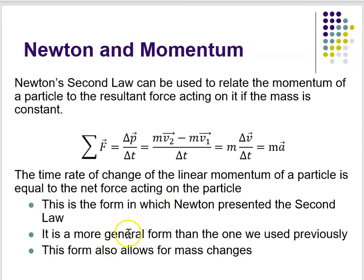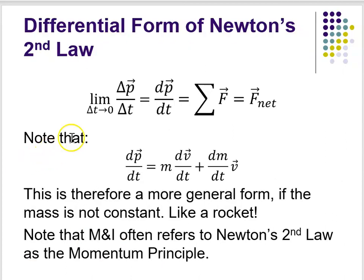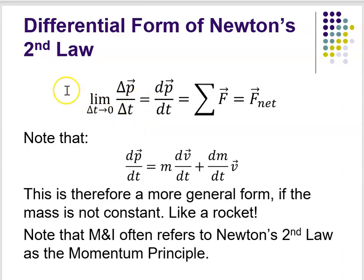And it's a more general form than F equals ma because it also allows for changes in mass. Now, if you take the limit of the change in momentum over the change in time, delta p over delta t, as the change in time goes to zero, then you end up with the differential form of Newton's second law: F is equal to dp/dt.